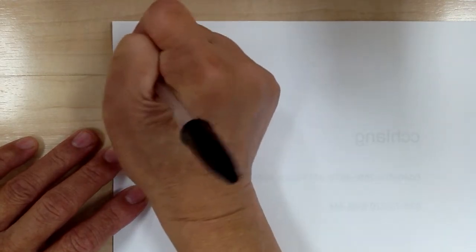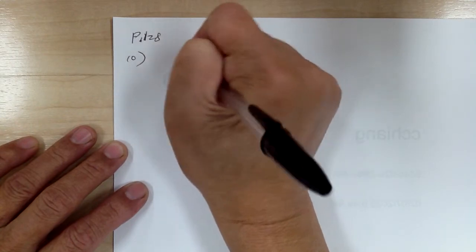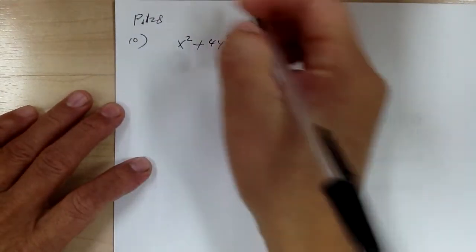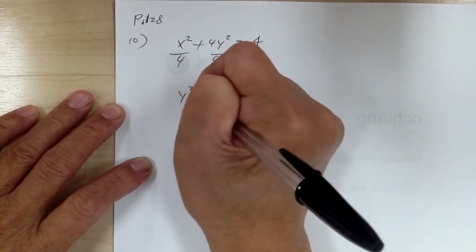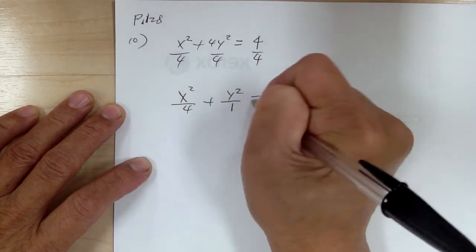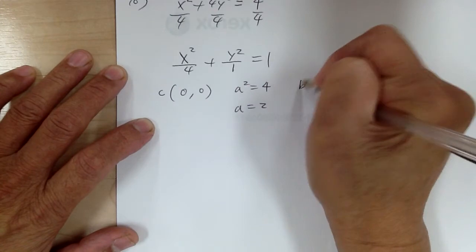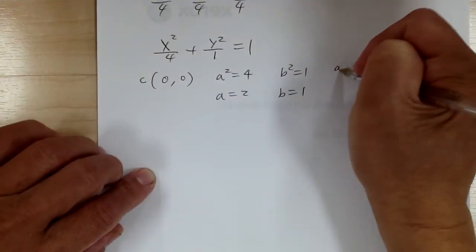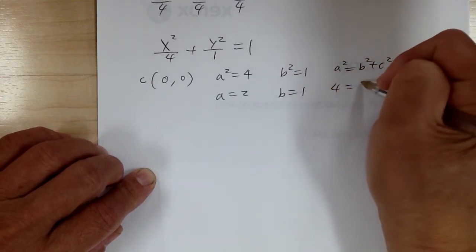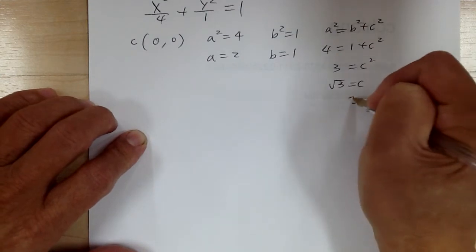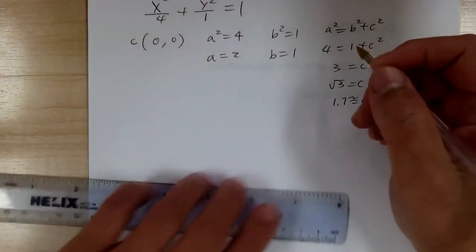Let's go to number 10. We have x squared plus 4y squared equal to 4. First, put it in standard form by dividing everything by 4. So you get x squared over 4 plus y squared over 1 equal to 1. Center at (0, 0). A squared equals 4, so a equals 2. B squared equals 1, so b equals 1. A squared equals b squared plus c squared: 4 equals 1 plus c squared, so c squared equals 3, c equals √3, about 1.7.